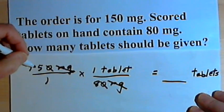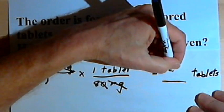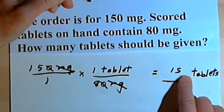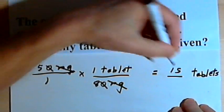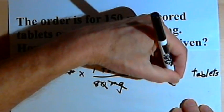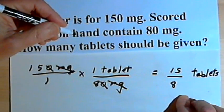So multiplying across, I'm going to get 15 tablets, which I've already got the tablets written. And that's going to be over what I get when I multiply the denominators, which is just 8. So we've got 15 over 8 tablets.